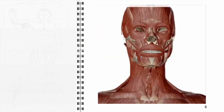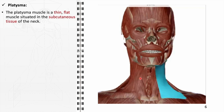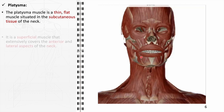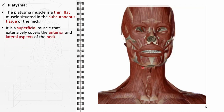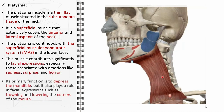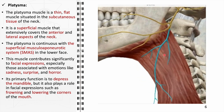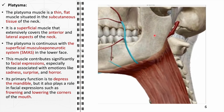The platysma muscle, another key component of the epicranial group, is a thin, flat muscle situated in the subcutaneous tissue of the neck, covering the anterior and lateral aspects extensively. It integrates with the superficial musculo-aponeurotic system in the lower face and plays a significant role in facial expressions conveying emotions like sadness, surprise, and horror. Its primary function involves depressing the mandible and assisting in frowning. The platysma is innervated by the cervical branch of the facial nerve and receives blood supply from the branches of the facial artery.